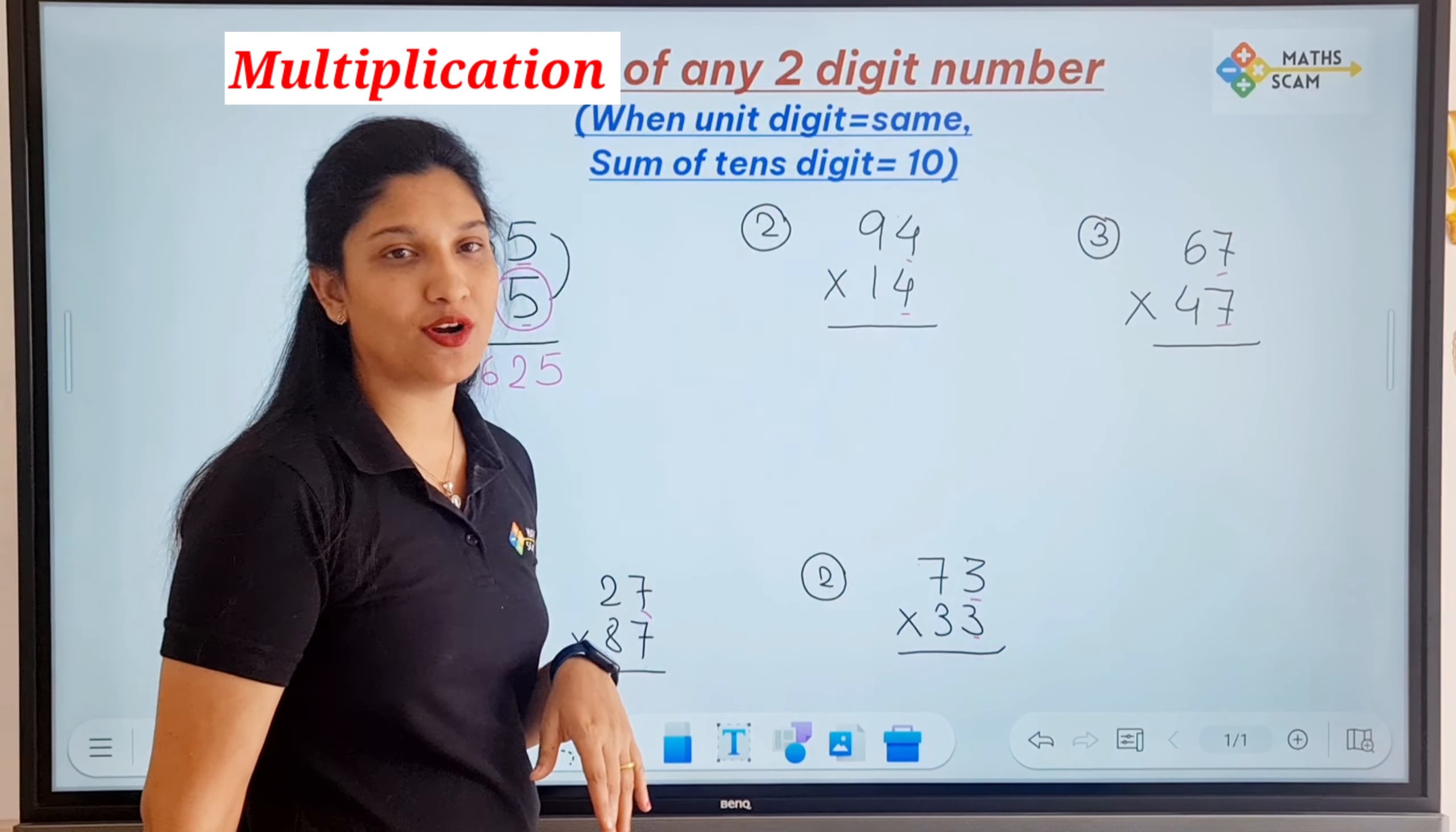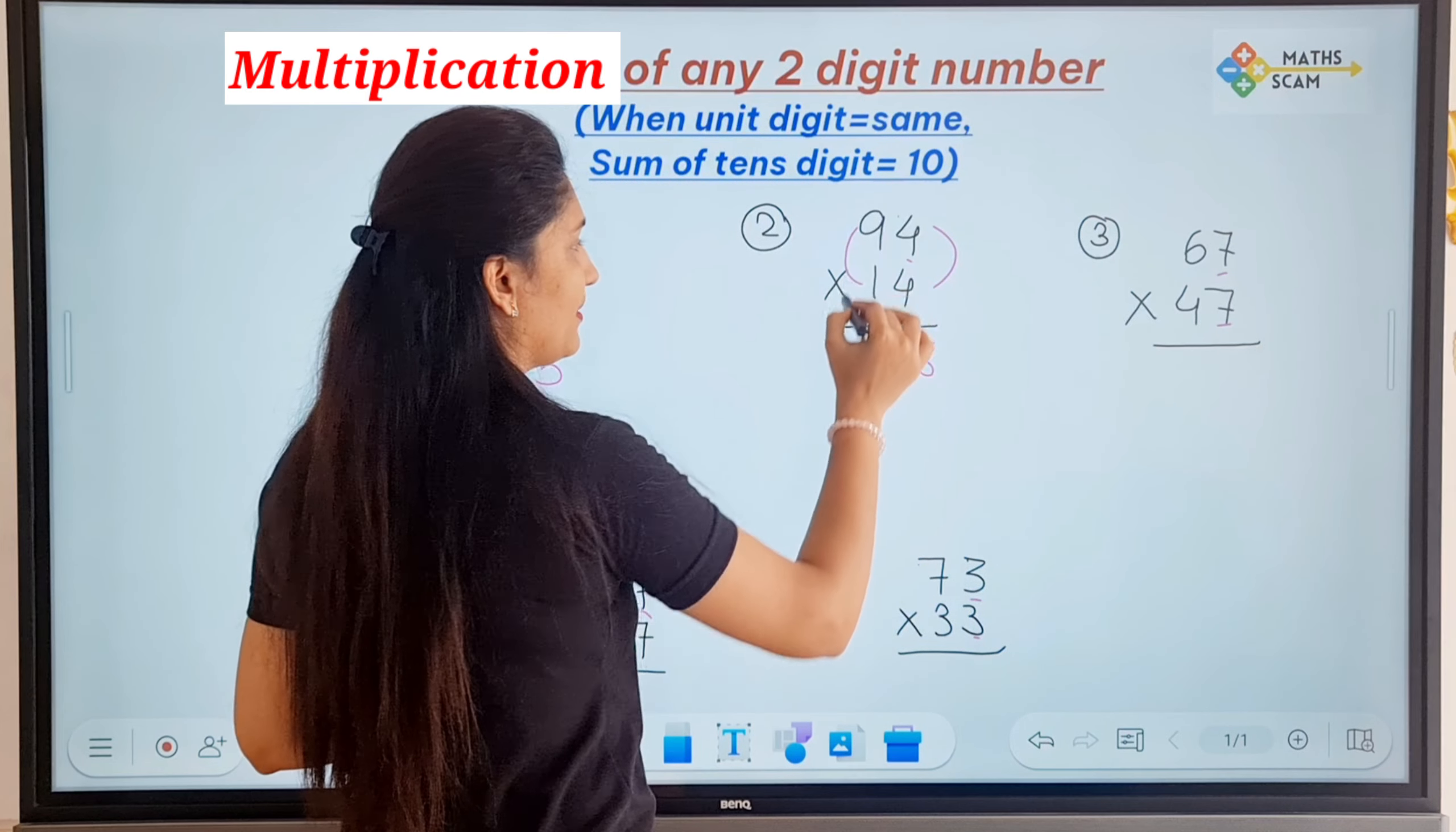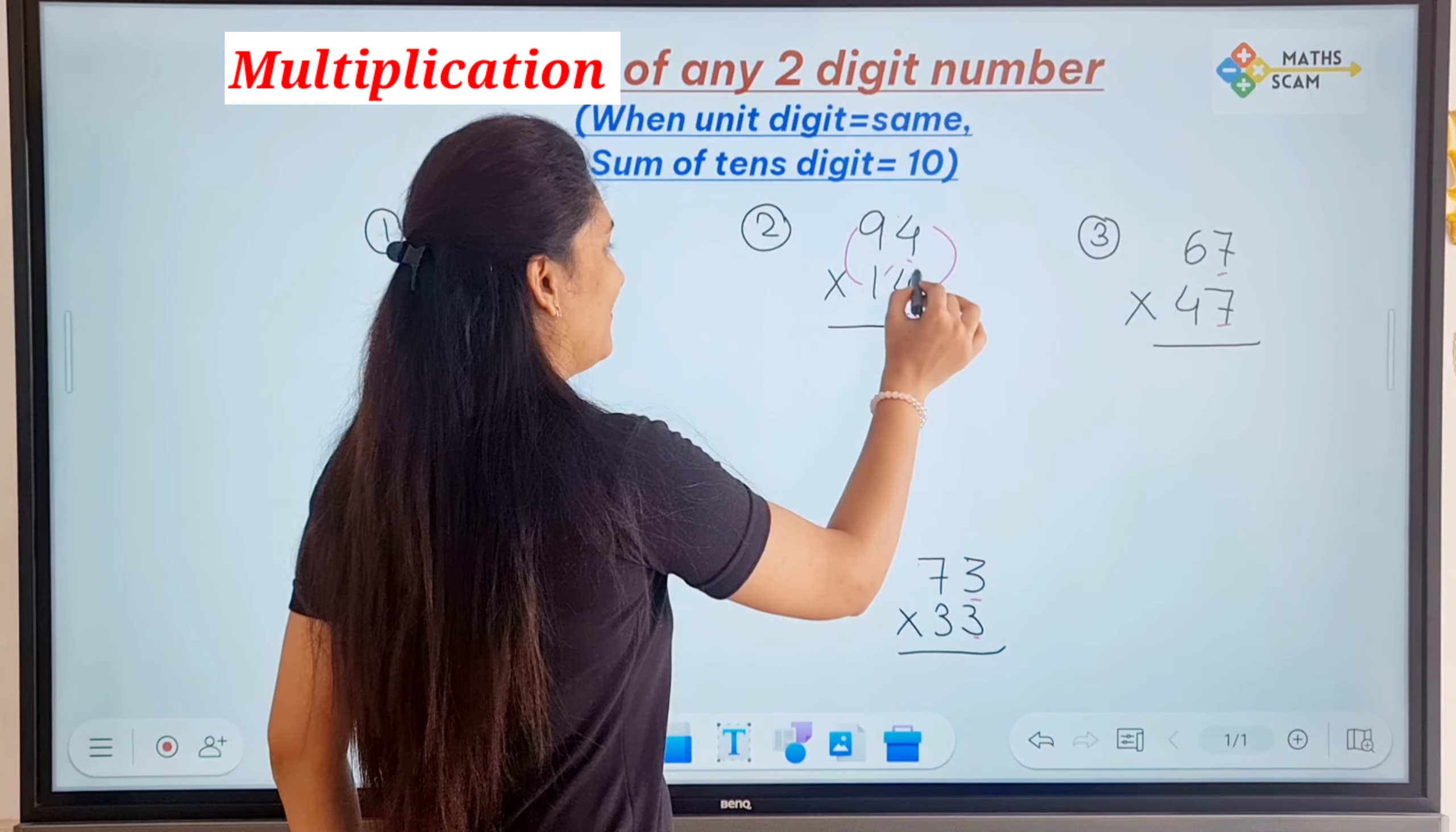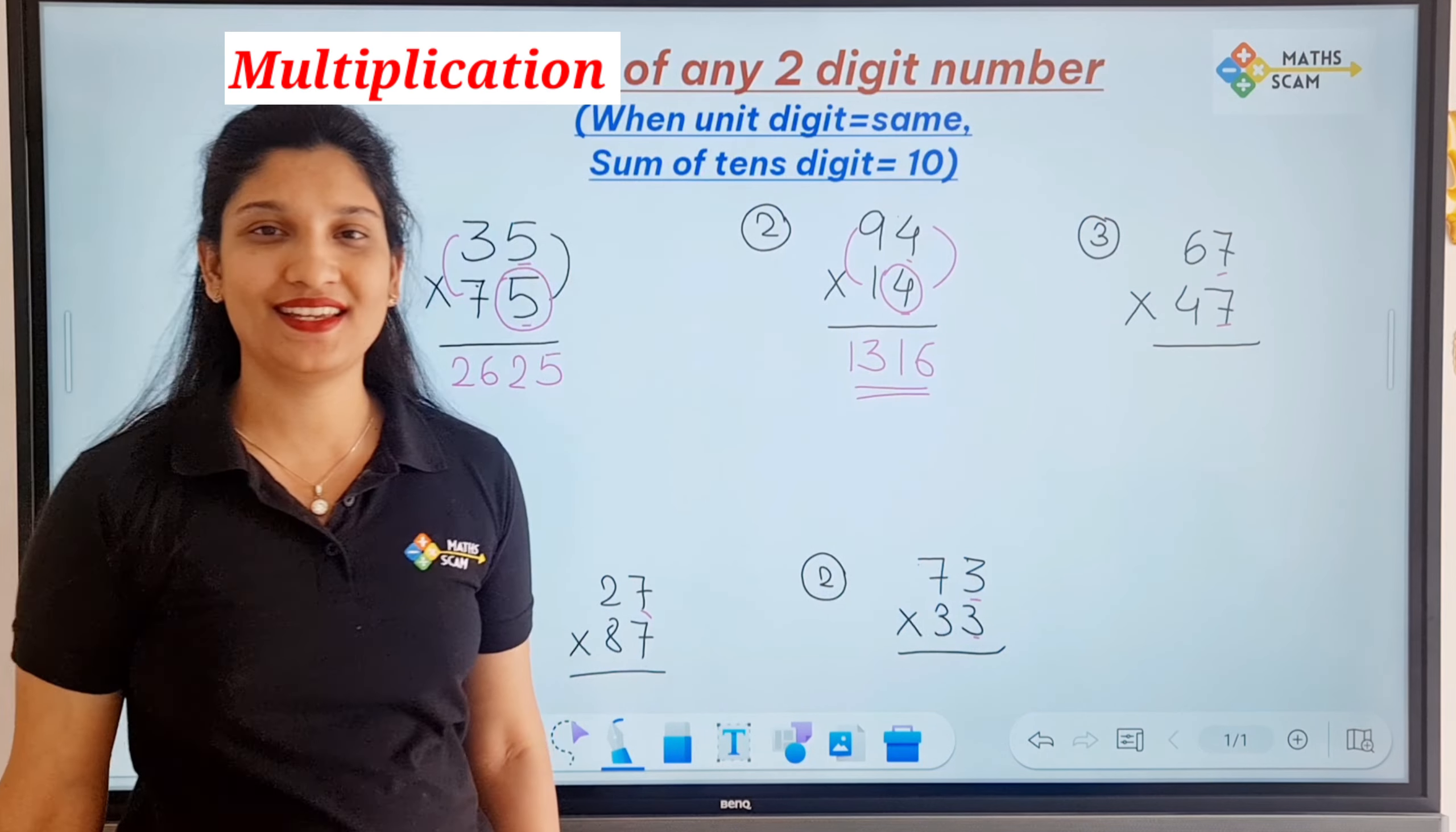Next question is 94 times 14. Unit digit multiplication is 16. Tens digit multiplication is 9 times 1, which is 9, but that's not the answer. 9 times 1 is 9, plus 4 equals 13. So 1316 is your final answer. Very easy.